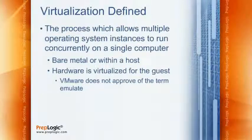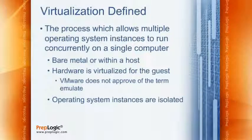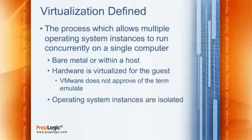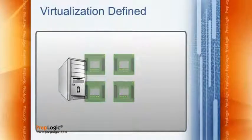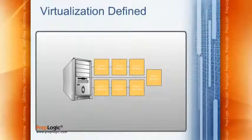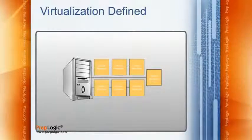One benefit of virtualization is that operating system instances are isolated — they run in their own assigned separate memory spaces, which helps with stability. A common concern is that running many virtual machines on one server could cause stability issues. You may have one physical server with four processors running six or seven virtual machines, which raises questions about stability given that even running multiple services on one OS could make a server unstable.